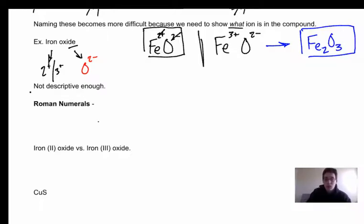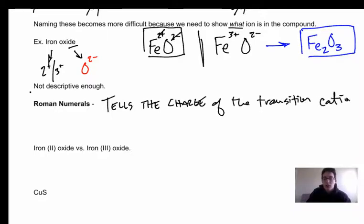So we need to be able to know how to name them, and we do this with roman numerals. The roman numeral tells us the charge of the transition cation.